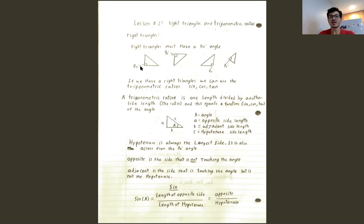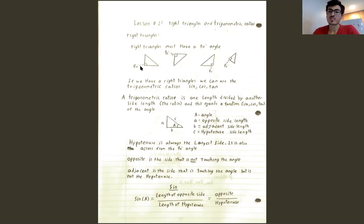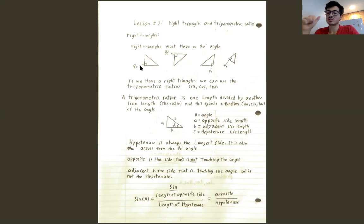Now, looking at trigonometric ratios — there are three we're going to look at: sine, cosine, and tan. These ratios will tell you the angle you have based on the ratio of side lengths. You take one side length divided by another side length, and that ratio is going to equal your function — sine, cosine, or tan — of that angle.